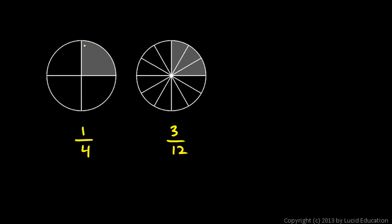In each case, we have the same portion of the entire circle shaded. So these two fractions are in fact equal to each other, and so we call them equivalent fractions. They are mathematically equivalent.